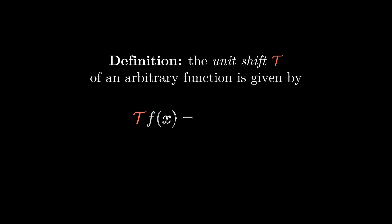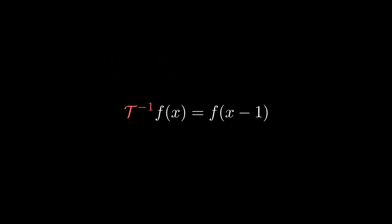It's about time we introduce a new linear operator. The unit shift, or translation operator, denoted by T, is the linear operator that maps f of x to f of x plus 1. Its inverse is just a shift in the other direction. And applying T n times results in a shift of n units.